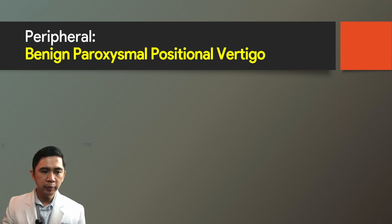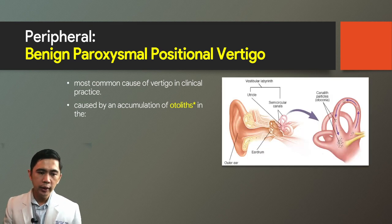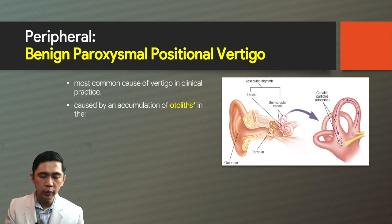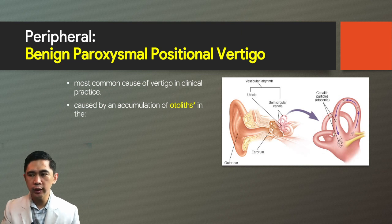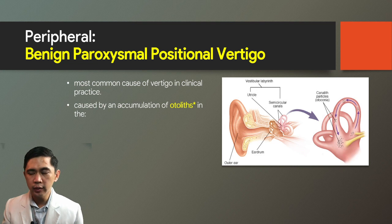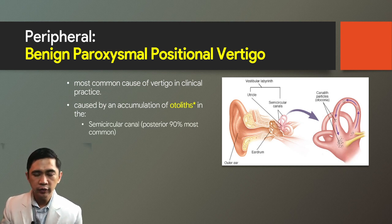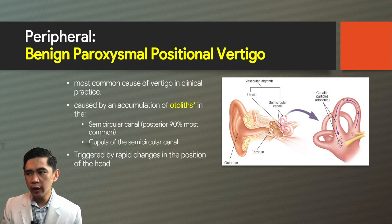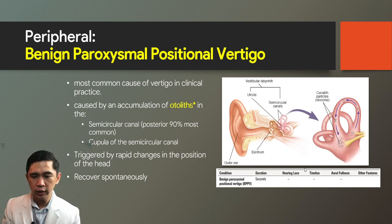Benign paroxysmal positional vertigo (BPPV) is the most common cause of vertigo in clinical practice. It is caused by accumulation of otoliths in the semicircular canals—otoliths that have been dislodged from the macula system of the utricle or saccule into the semicircular canals, stimulating the cupula system and producing a false sense of motion. The most common BPPV involves the posterior semicircular canal. It is triggered by rapid changes in head position, and around 80% recover spontaneously. Duration is seconds, and there is no associated hearing loss, tinnitus, or aural fullness.